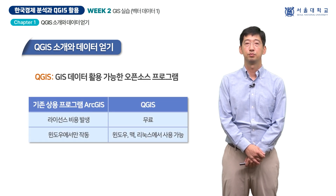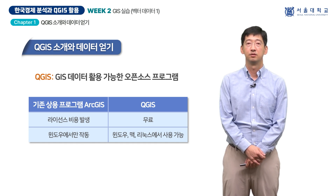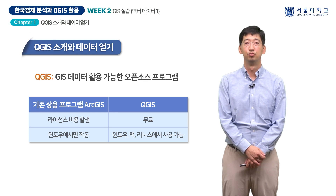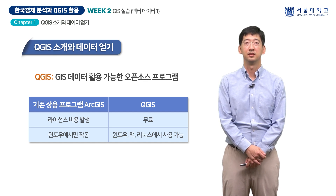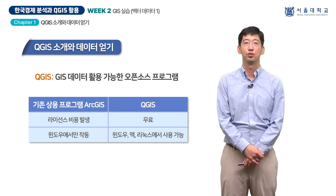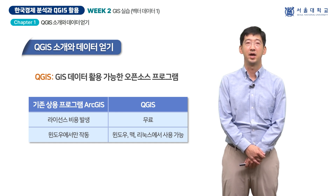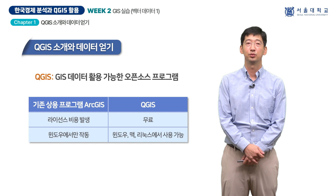QGIS는 오픈소스 프로그램으로 GIS 데이터를 활용할 수 있는 프로그램입니다. QGIS의 가장 큰 장점은 무료로 사용 가능하다는 것입니다. ArcGIS는 상당히 유용한 도구지만 라이센스 비용이 발생하며 주로 윈도우에서만 작동한다는 제약사항이 있습니다. 이에 반해 QGIS는 무료로 사용 가능하며 윈도우, 맥, 리눅스 등 다양한 운영체제에서 작동하므로 활용도가 높습니다.